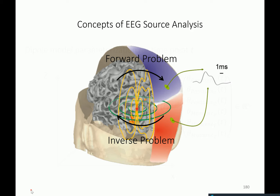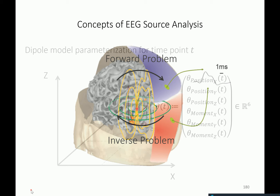This is a visual representation of the forward and inverse problem. Central to this whole thing is the dipole, which is induced by excitatory post-synaptic potentials or inhibitory post-synaptic potentials, giving rise to extracellular currents and sink-source configurations, which then propagate to the scalp and can be detected in EEG electrodes. From a technical perspective, such a dipole is specified at a given time point by six numbers — where it is located in 3D space.